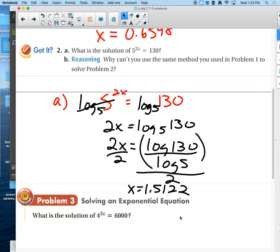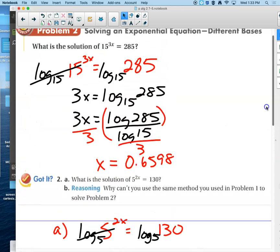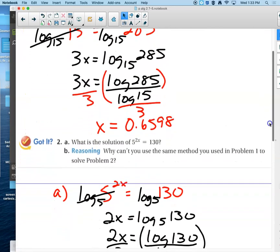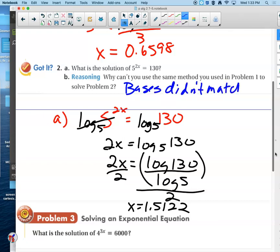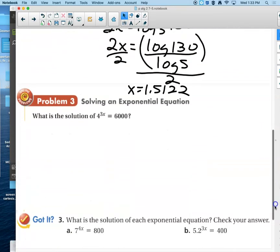Now B says, why couldn't we use the exact same method in problem 1 for problem 2? Because the bases don't match with these. 15 raised to some power is not 285, and 5 raised to some power is not 130. So the bases didn't match. So we needed a new way, and that new way is to take the logarithm of both sides of the equation. It's a good thing we learned the change of base formula because that works out pretty slick.